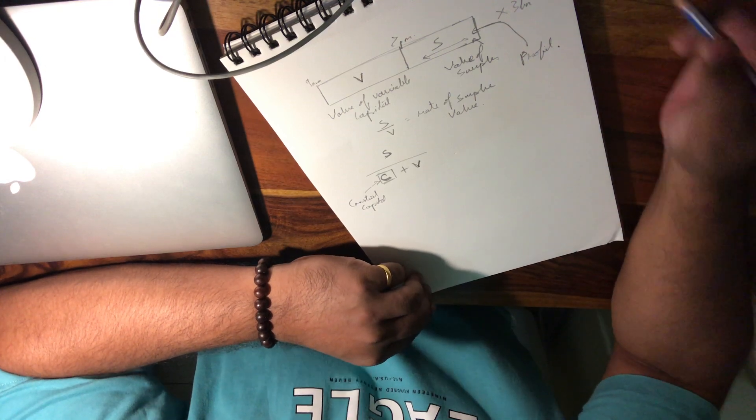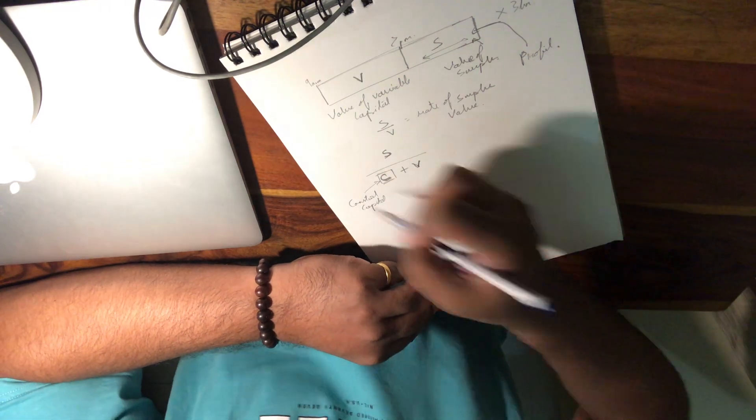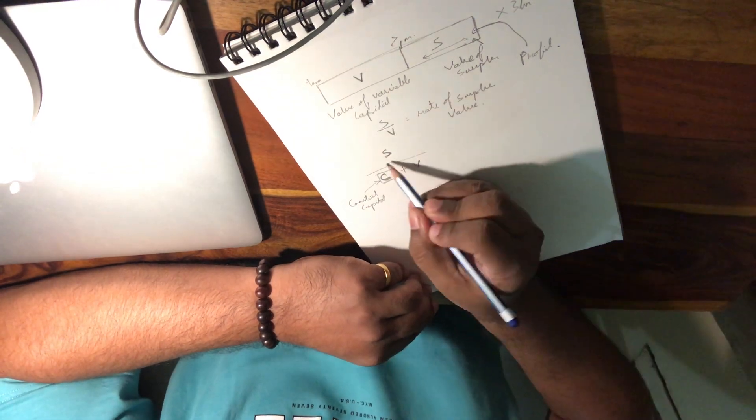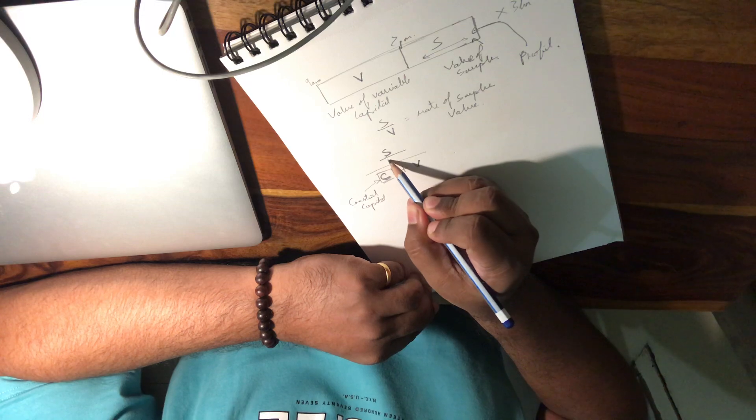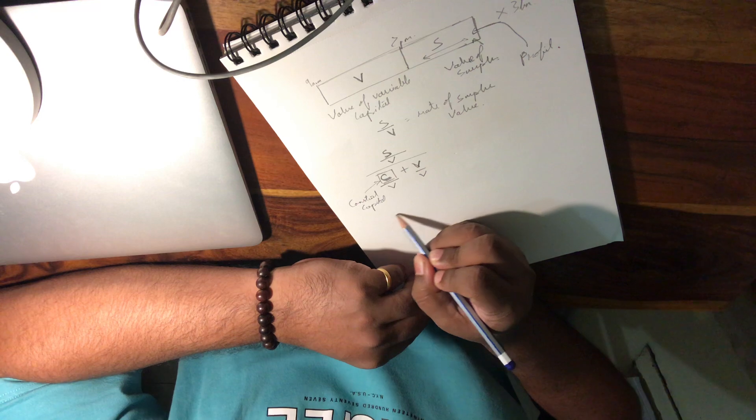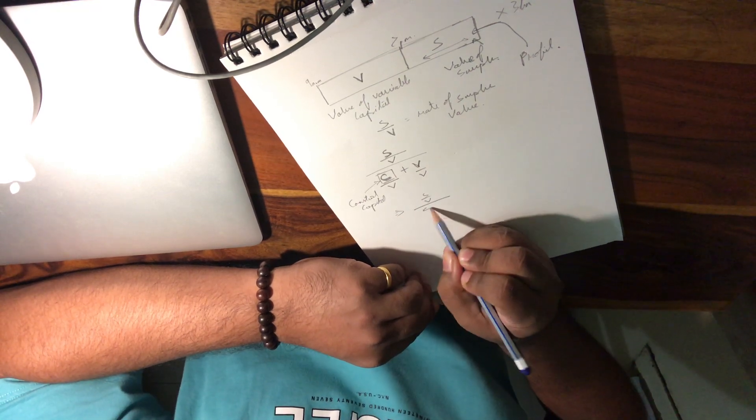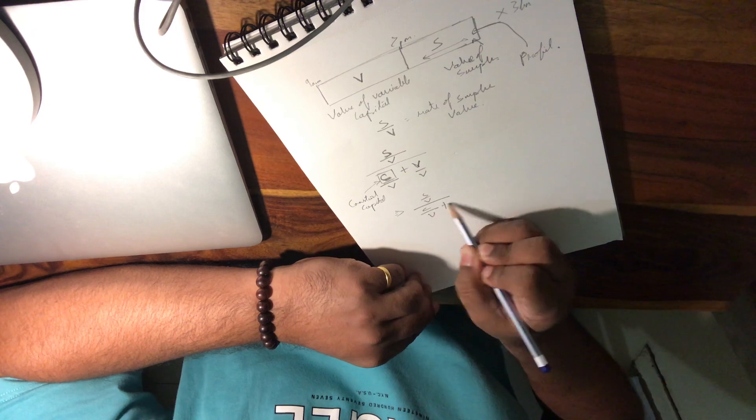So this equation essentially is where Marx sees an issue with capitalism. Suppose if we were to do a simple mathematical exercise and divide this equation with V, so the new equation then becomes S by V divided by C by V plus 1.